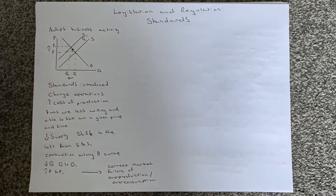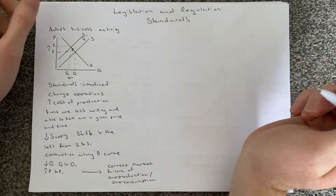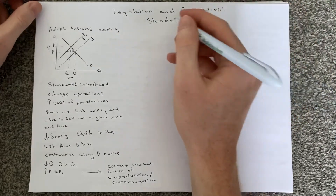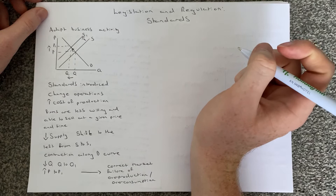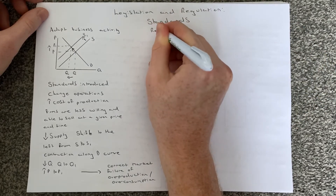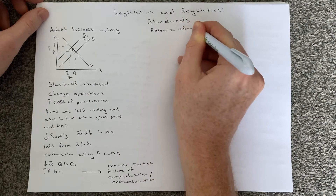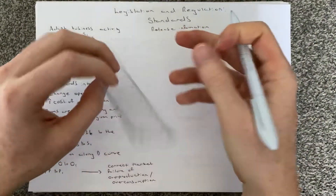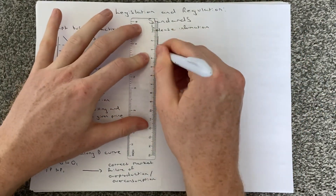Certain standards may also mean that a firm has to release certain information. So that could be another way we talk about how legislation and regulation corrects market failures. Again, I'm going to draw a demand and supply diagram here.